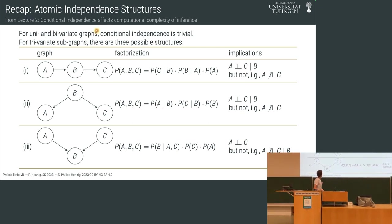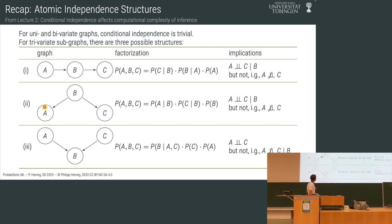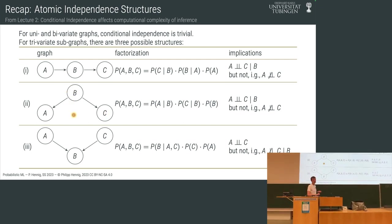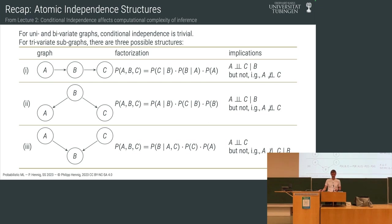These different types of structures lead to different conditional independence structure. Back when we covered this, maybe it was a bit abstract — 'why do we care?' — and now, half a year later, we've almost forgotten about it. But actually it was always with us during the last few weeks; it's just that the models we looked at were much more complicated, so this simple atomic structure was not always easy to see.